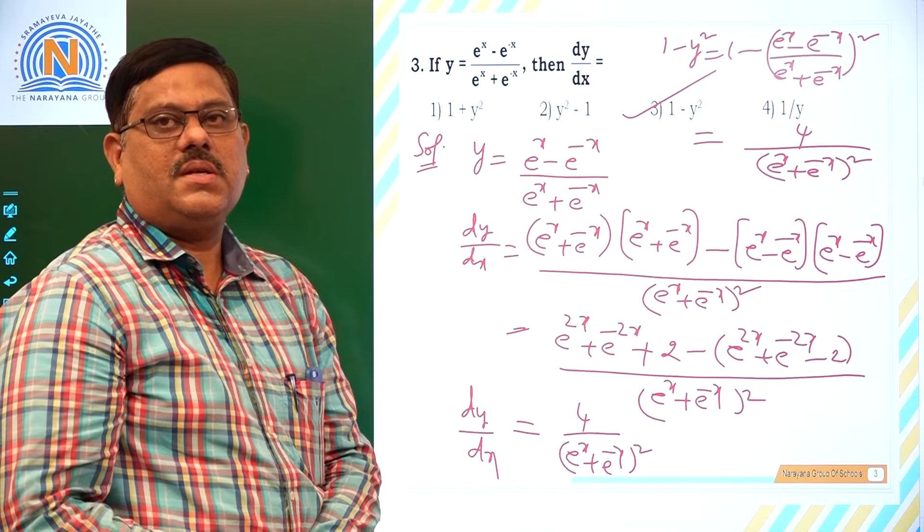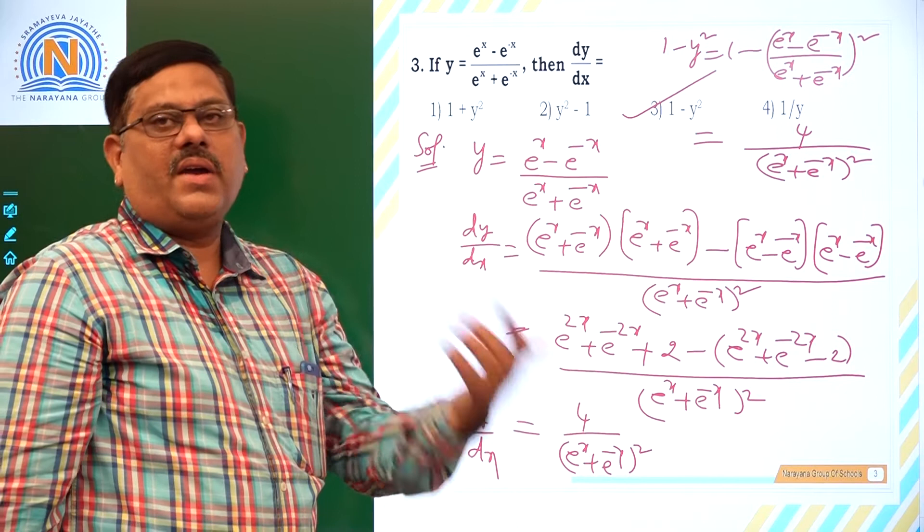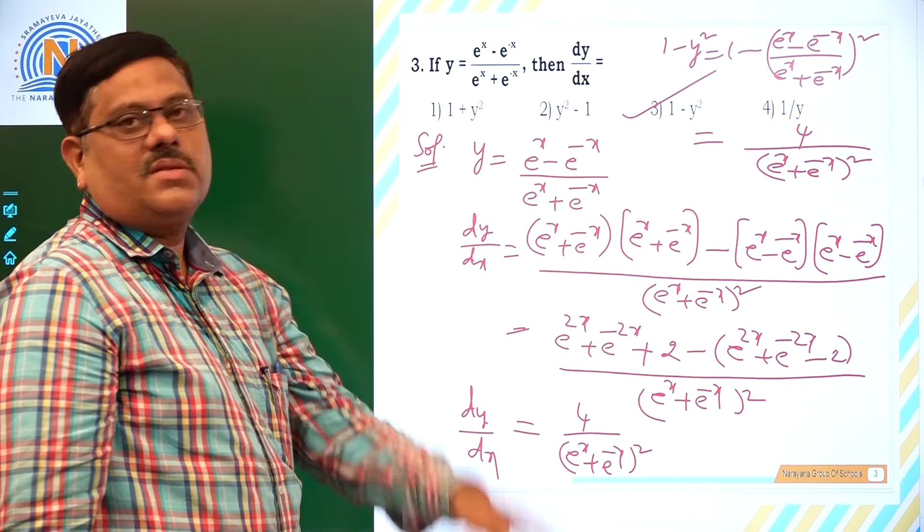That is the right answer. Alternatively, this function can be written as tanh(x). If y = tanh(x), then dy/dx is the derivative of tanh(x), which is sech²(x). And sech²(x) is nothing but 1 − tanh²(x) = 1 − y². That way also we can solve it.